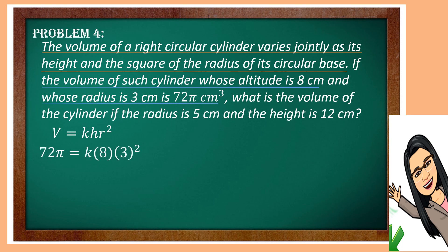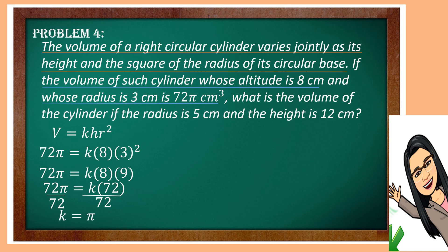So 72π cubic centimeters is equal to K times 8 times 3 squared. The square of 3 is 9, times 8 is 72. Dividing both sides by 72, we will get K is equal to π. Then our equation of variation is V is equal to π times H times R squared.